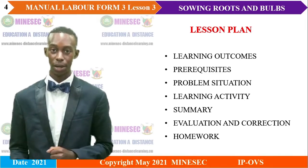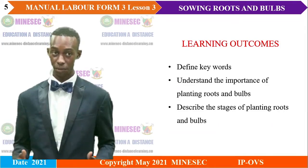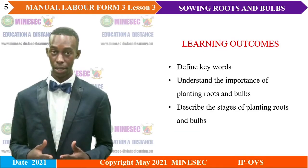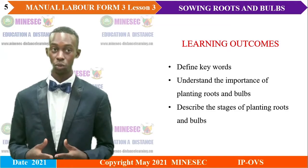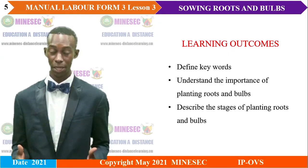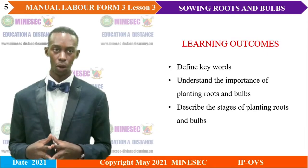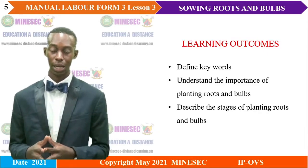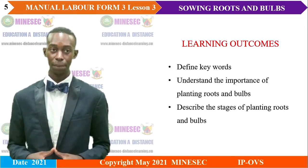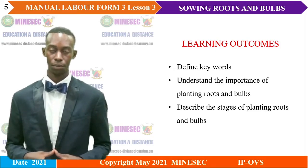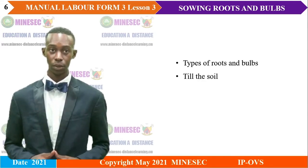Let's start with the learning outcomes of this lesson. By the end of this lesson, learners should be able to: define keywords that we will encounter in this lesson, understand the importance of planting roots and bulbs, and describe the stages of planting roots and bulbs.